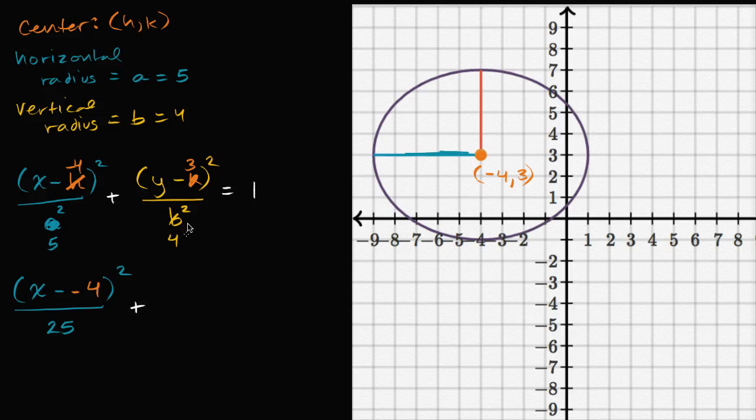Plus y minus three squared, y minus the y-coordinate of our center, y minus three squared, over our vertical radius squared, so b squared is going to be 16, and that is going to be equal to one.